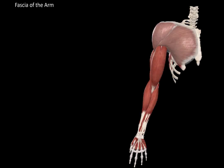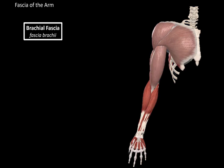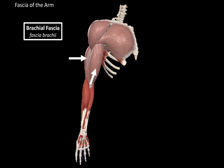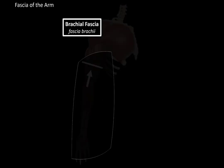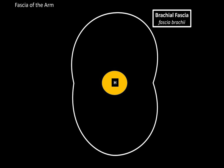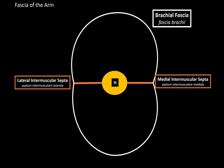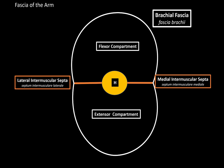Now let's do the fascias of the arm. The main fascia of the upper arm is the brachial fascia, and what's significant with this fascia is that it forms compartments. Looking at the lateral view, you will see an anterior compartment and a posterior compartment separated by the brachial fascia. In a cross section of the arm, we will see the brachial fascia and the humerus in the middle. The brachial fascia is connected to the bone through intermuscular septa — the medial intermuscular septa and the lateral intermuscular septa — forming the flexor compartment and the extensor compartment.